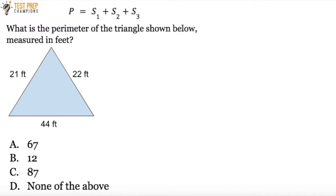What is the perimeter of the triangle shown below measured in feet? Is it A, B, C, or D?